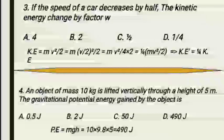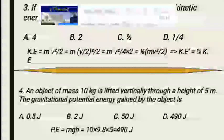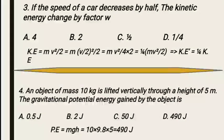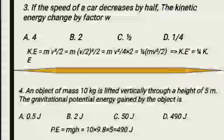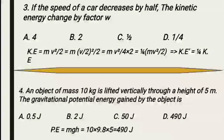The third MCQ statement is: if the speed of a car decreases by half, by what factor does the kinetic energy change? This means if a car is in motion and its speed decreases to half — that is, becomes nim (half) — by what factor does the kinetic energy change? The kinetic energy by definition equals one half m v squared.